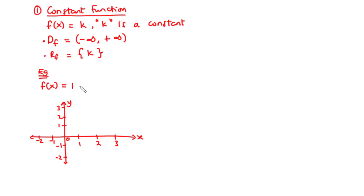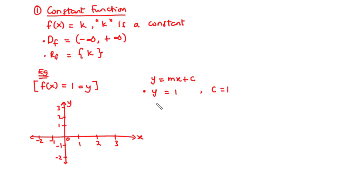Let's think of this function as y equals 1 and compare that to the equation of a straight line, which is y equals mx plus c. Comparing these two equations, realize that this function does not have a gradient, neither does it have an x value. So we can say that c is equal to 1. Now c is called the y-intercept, which means we are going to have a straight line which cuts through 1 on the y-axis at the point (0, 1). So let's draw a straight line that cuts through 1 on the y-axis, parallel to the x-axis. This is the line y equals 1.